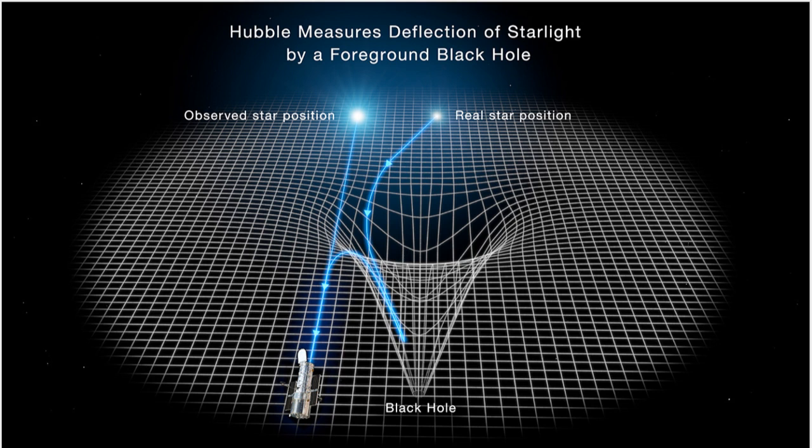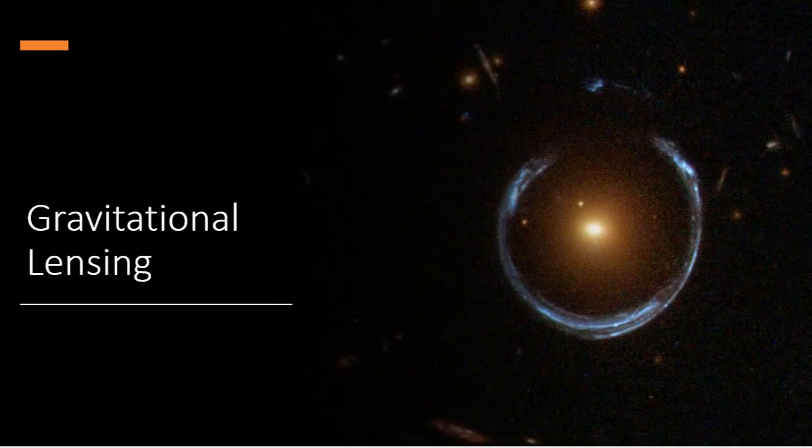If a star gets closer to a black hole, its orbital path will be affected. Similarly, any light from a star or galaxy behind a black hole can be bent by the black hole's immense gravity, an effect called gravitational lensing. This way, we can see the star or the galaxy.